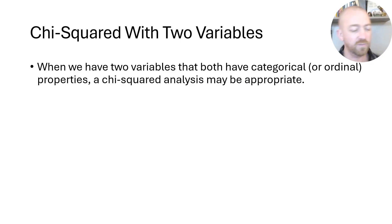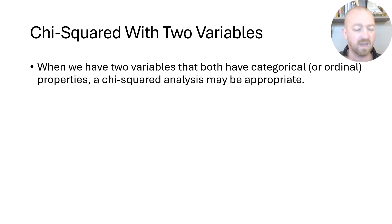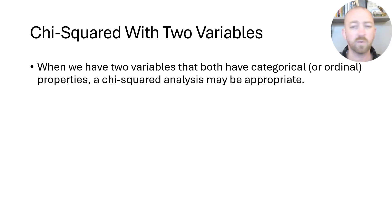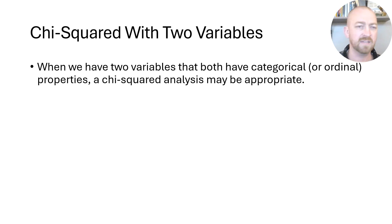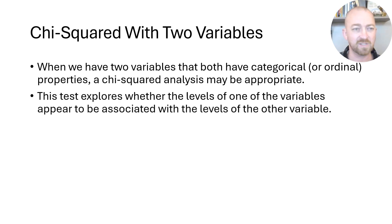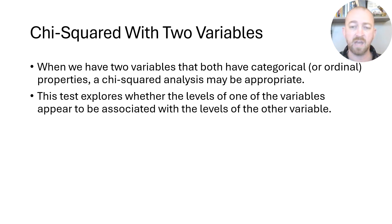So if you have two variables and both of them are categorical in nature, or ordinal, that's okay too, then a chi-squared analysis might be appropriate. If they have more than ordinal properties — for example, they're getting interval or certainly ratio — it's probably not correct to be using a chi-squared analysis. You should look into some other analyses and talk to somebody very familiar with statistics. The chi-squared analysis looks for patterns among those two variables and how they're falling.